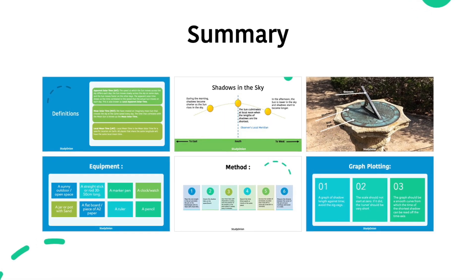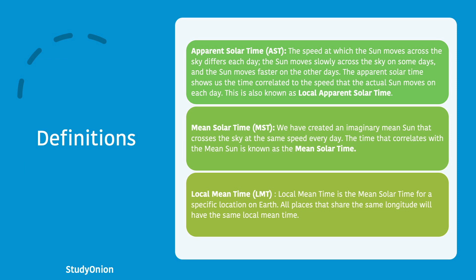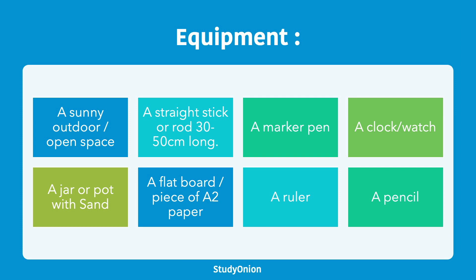To summarize: the speed at which the real sun moves across the sky differs each day. The apparent solar time demonstrates the time in correlation to the speed at which the actual sun moves, also referred to as the local apparent solar time. The mean solar time is the time that correlates with the imaginary mean sun that crosses the sky at the same speed every day, and local mean time is the mean solar time for a specific location on Earth — all places sharing the same longitude will have the same local mean time.